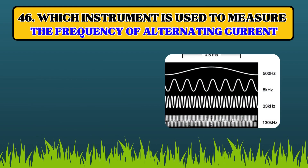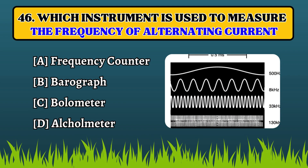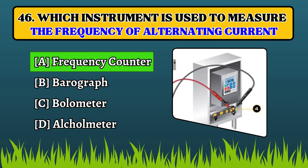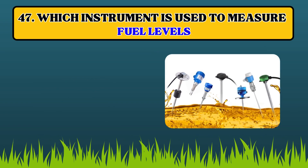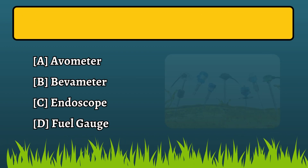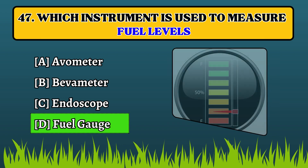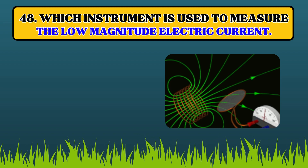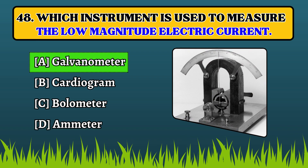Which instrument is used to measure the frequency of alternating current? Frequency counter. Which instrument is used to measure fuel levels? Fuel gauge. Which instrument is used to measure the low-magnitude electrical current? Galvanometer.